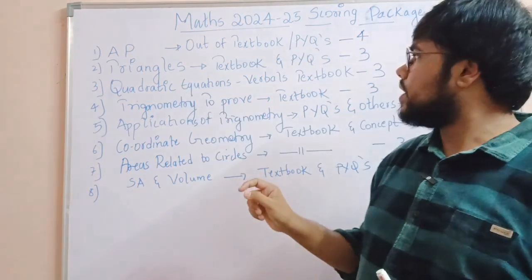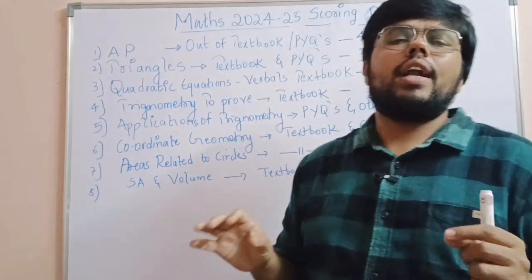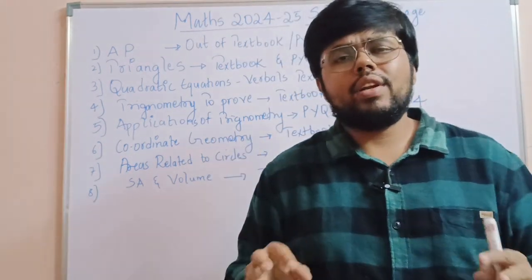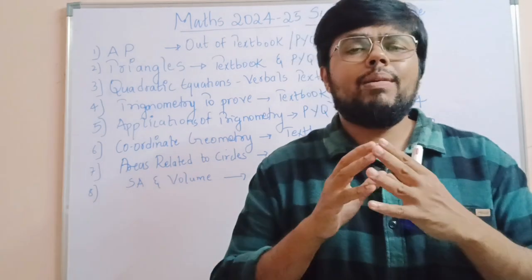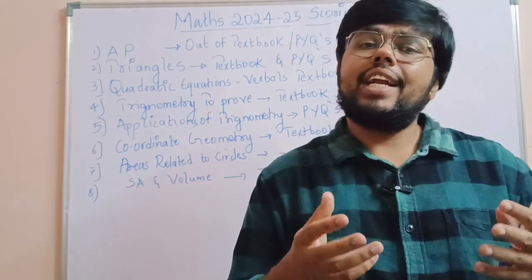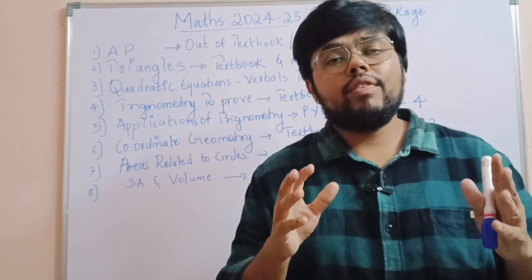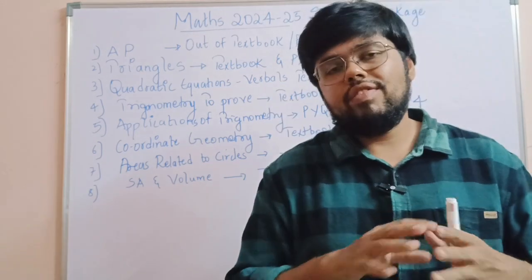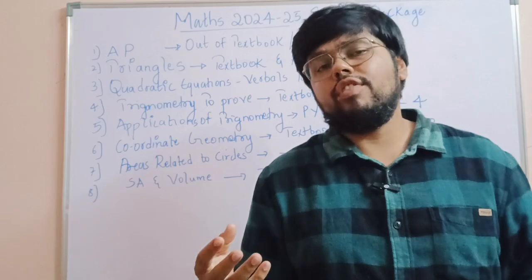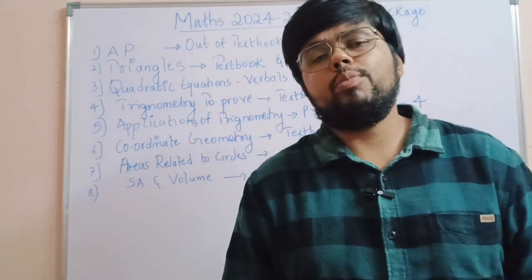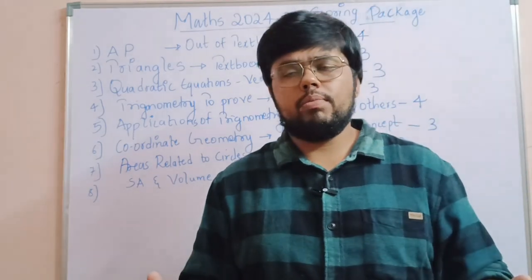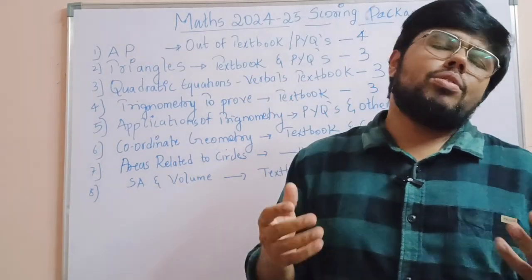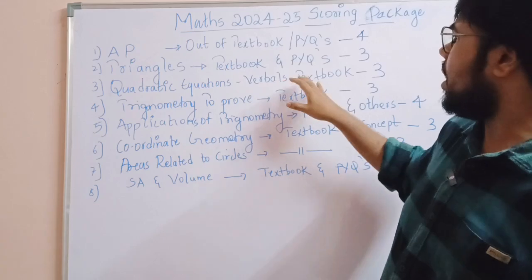Next, quadratic equations. It is asked for three marks and is 100% from the textbook. There are around 10 to 15 problems in the textbook — try to practice and understand them, it will be very easy. You might get an internal option too. Solve all the problems in the textbook first. If you still have time, you can also solve a few problems from previous year question papers. If you see both model papers, it seems like it will be direct from the textbook.